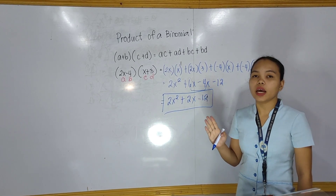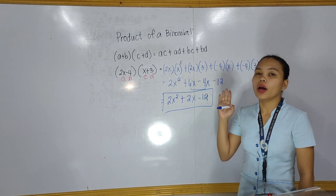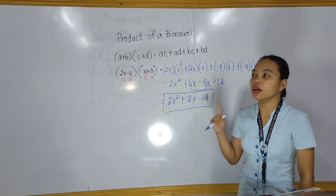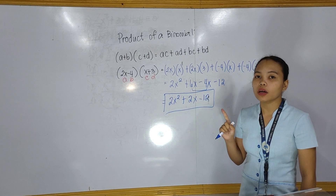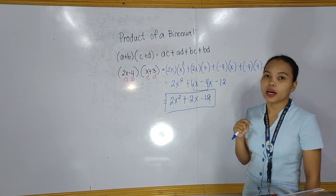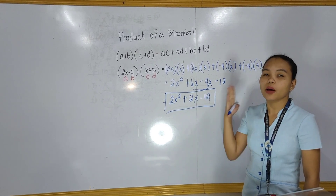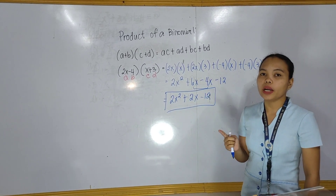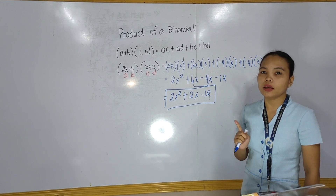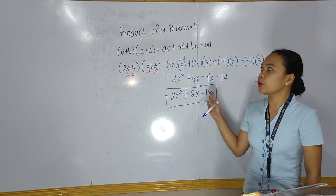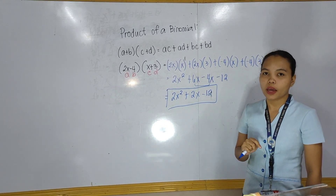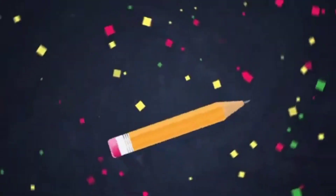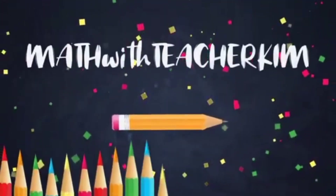So we get the same function and answer whether we use the FOIL method or this formula. It's up to you which method you prefer when finding the product of a binomial. Thank you.